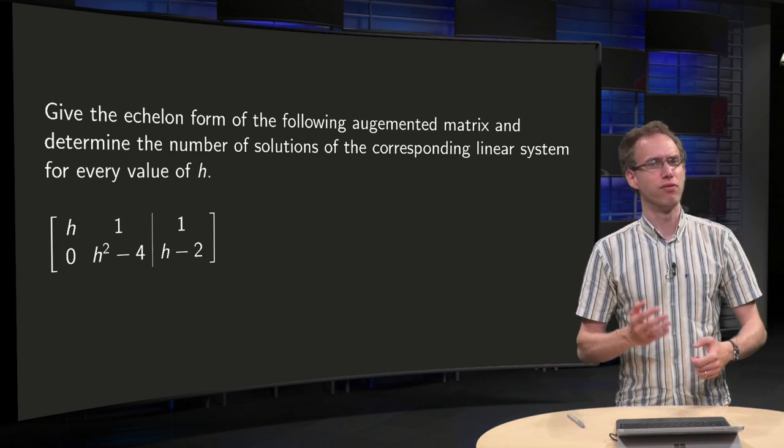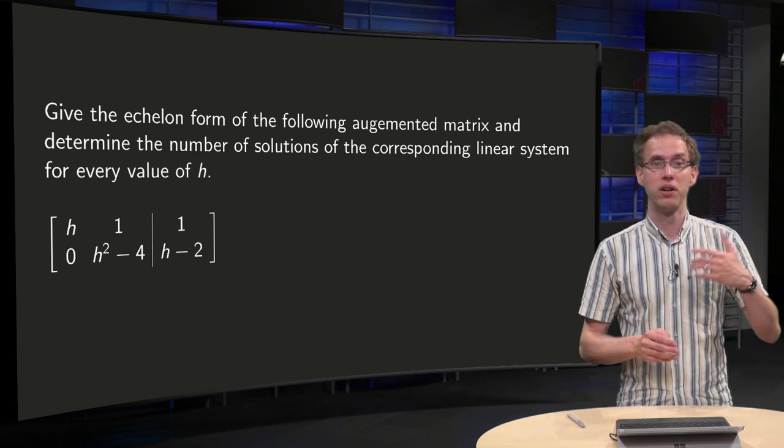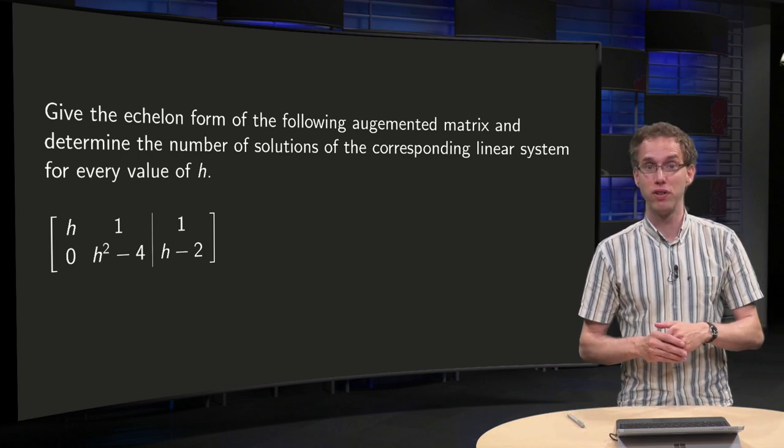And you get questions like for what values of h is the system inconsistent, or the echelon form for each value of the parameter h.